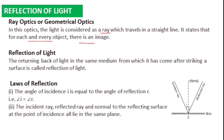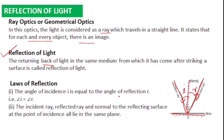Two important phenomena take place for each object: one is reflection of light and another is refraction of light. Reflection is not in your syllabus for this year, but you must still know about it. Reflection of light is the bouncing back of light in the same medium. This is a reflecting surface; the ray incident on it is the incident ray, and after bouncing back it is called the reflected ray. The angle between the normal and incident ray is called the angle of incidence, and between the normal and reflected ray is the angle of reflection.